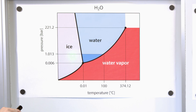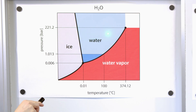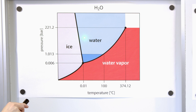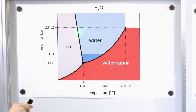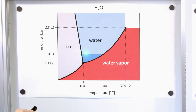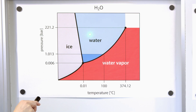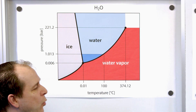Now if we increase the pressure, we slide up this scale to higher and higher pressures. You would still have a solid phase, then a liquid phase, then a gas phase even at higher pressures. But notice the water phase is much, much bigger — whereas at atmospheric pressure the water phase spans exactly 100 degrees Celsius, at higher pressures the water phase is much wider in terms of temperature.